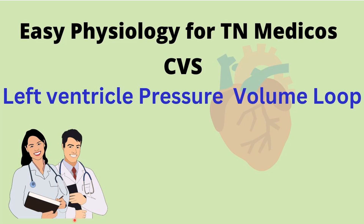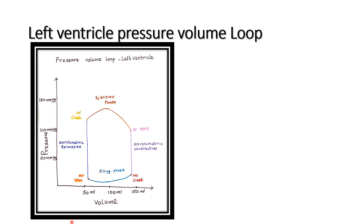Welcome, good morning. In this video we are going to discuss the left ventricle pressure-volume loop — this is important short notes from the cardiovascular system. The x-axis depicts the left ventricular volume, the y-axis depicts the left ventricular pressure. Systole starts at the end-diastolic volume; the average end-diastolic volume is 130 ml.